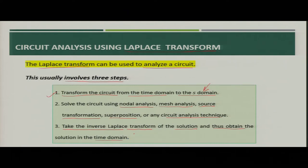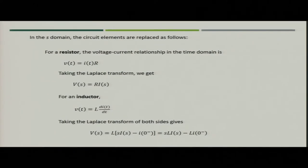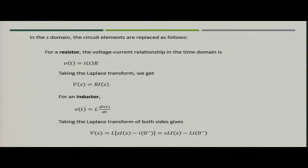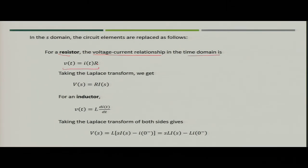The first thing we have to understand is how we can convert the various circuit elements from time domain into S domain. Let us see the three key elements: resistors, inductors, and capacitors, and how we can transform them into S domain. For a resistor, the voltage-current relationship in time domain is given by V = IR, that is, Ohm's law.